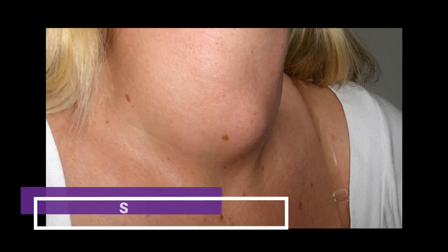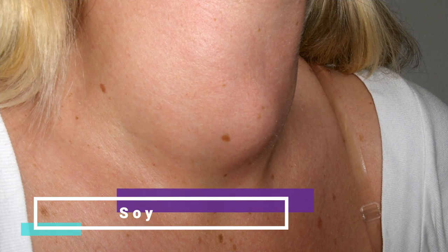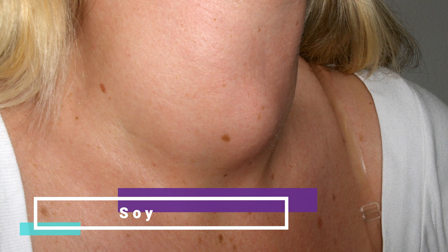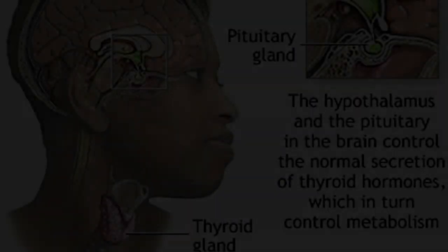Soy. While soy doesn't contain iodine, it's been shown to interfere with some treatments for hyperthyroidism in animals. Avoid or limit foods with soy such as soy milk, soy sauce, tofu, and soy-based creamers.